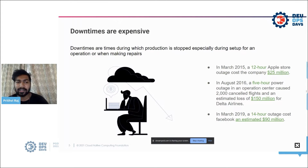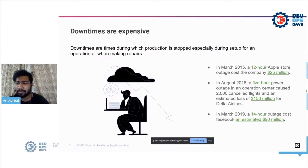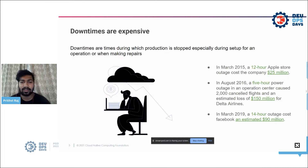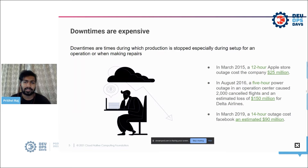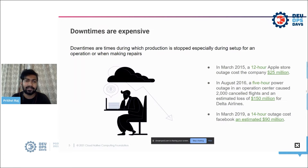Downtimes are pretty expensive. Apple back in 2015 lost approximately 25 million dollars; companies over the years have lost 90 million, 150 million — examples from the airline sector, Facebook from social media, and recently Slack went down due to a DNS error and lost a significant amount. These examples of production downtimes stop your operations, impact your system, and highlight why resiliency and reliability are so important.